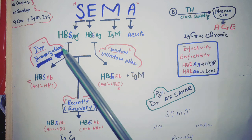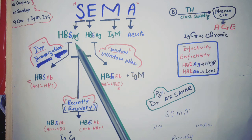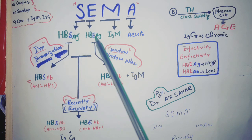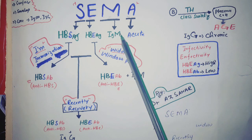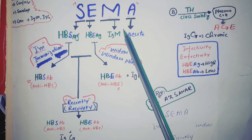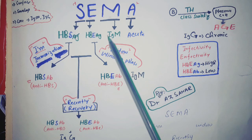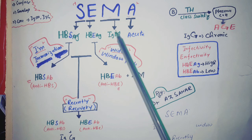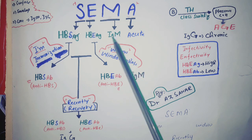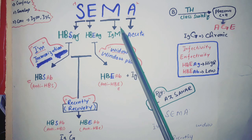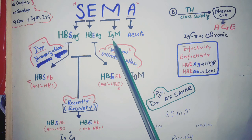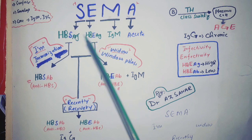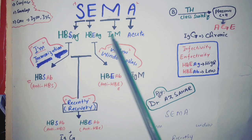For chronic infection it is similar to acute but with one change: IgM is the immediate, earlier antibody, so in acute infection we see IgM. In chronic infection we see IgG instead — just replace IgM with IgG and that gives chronic infection.